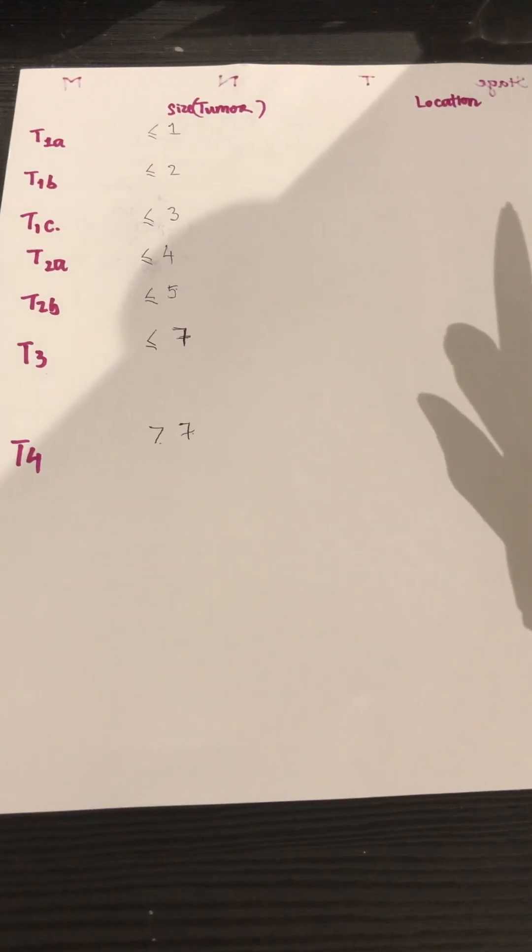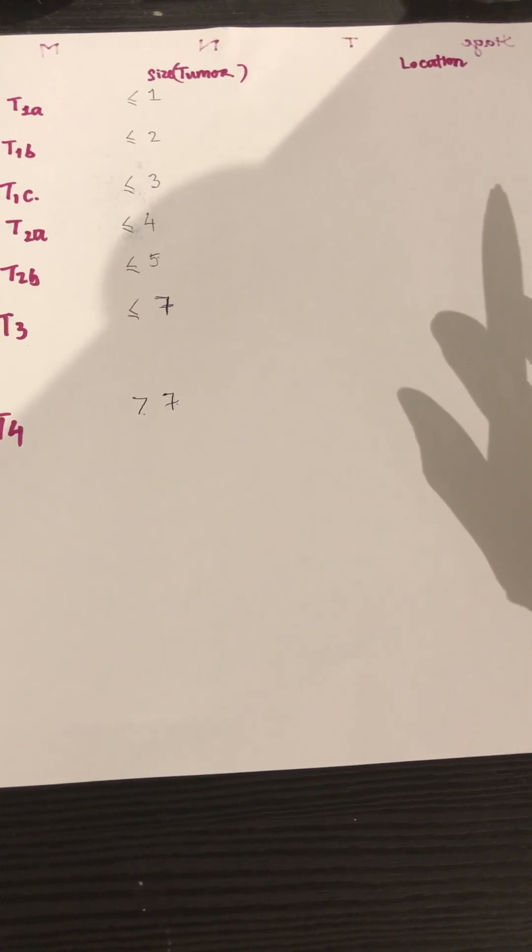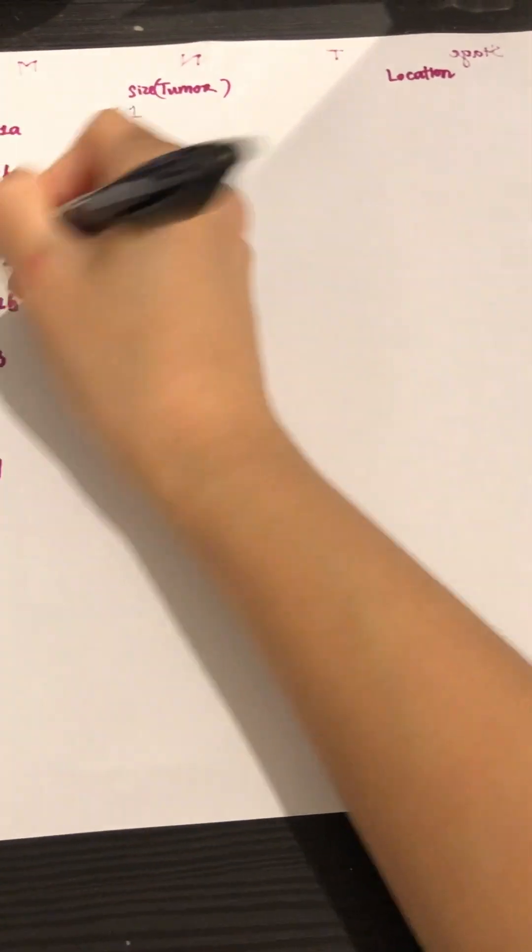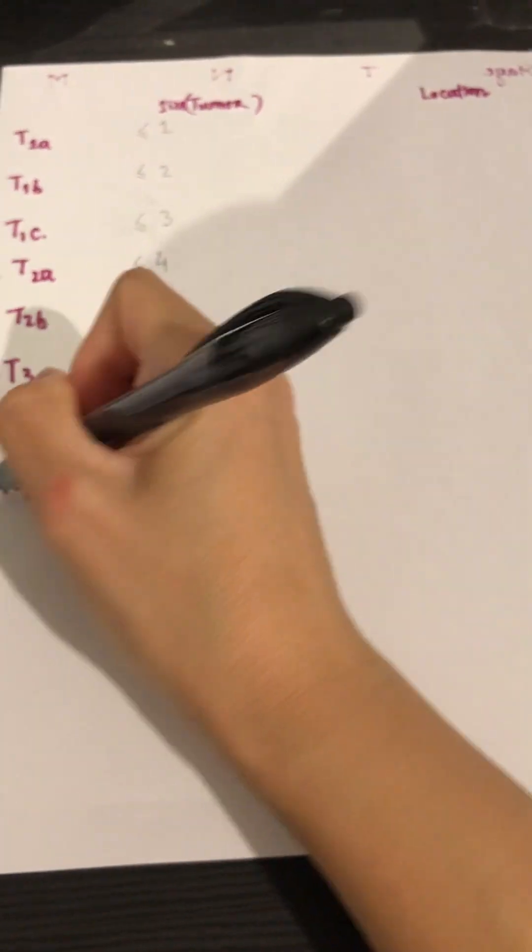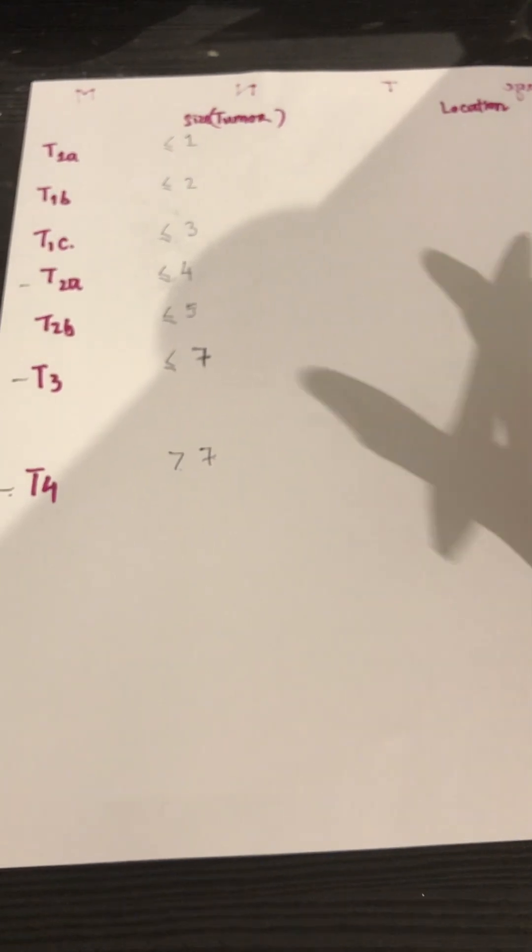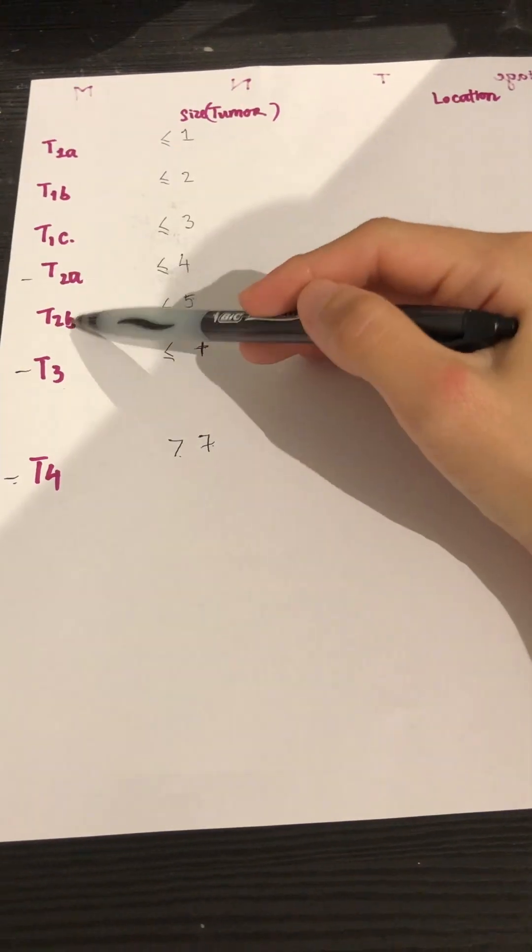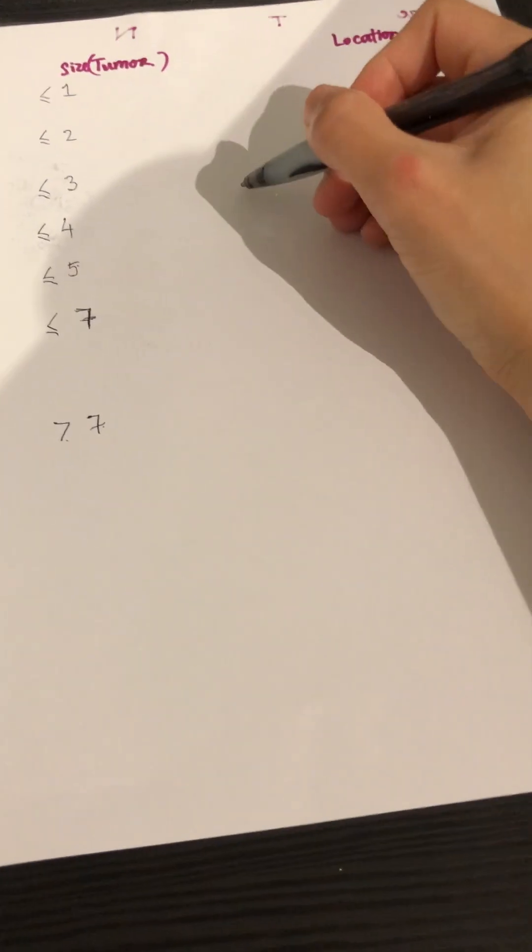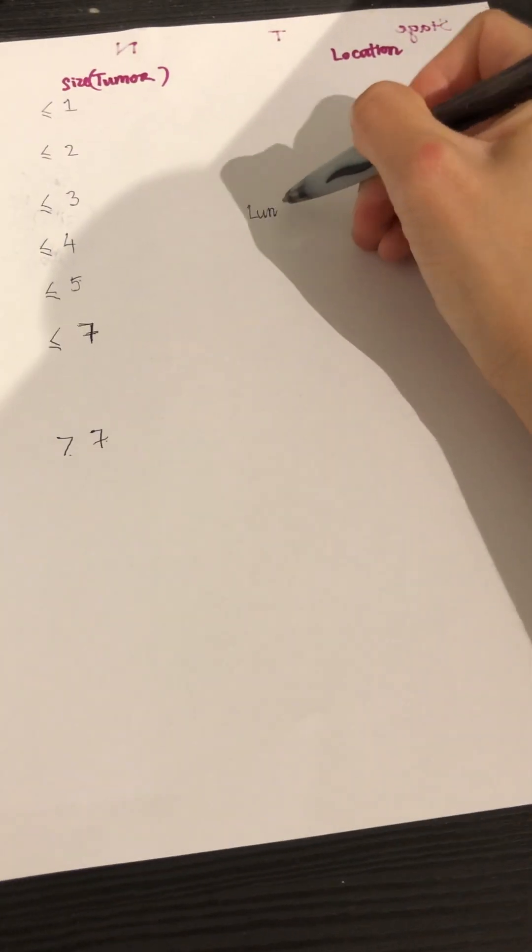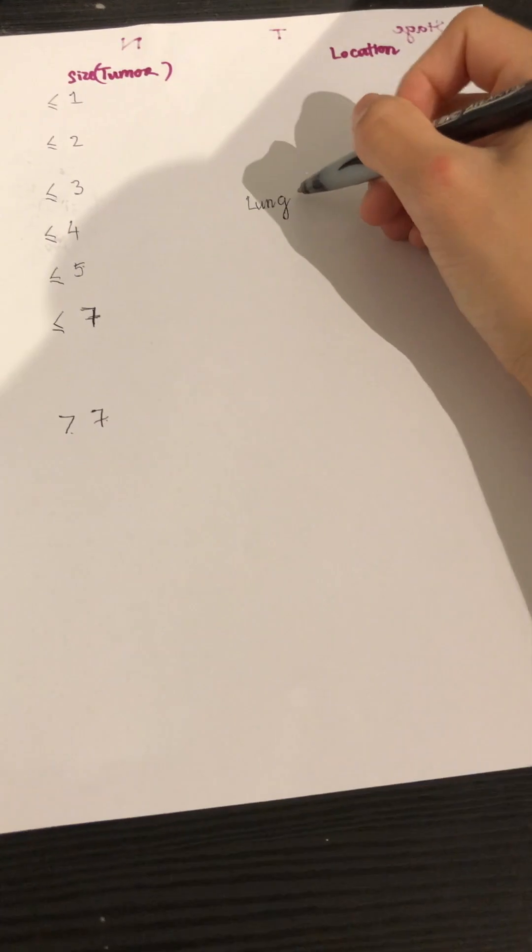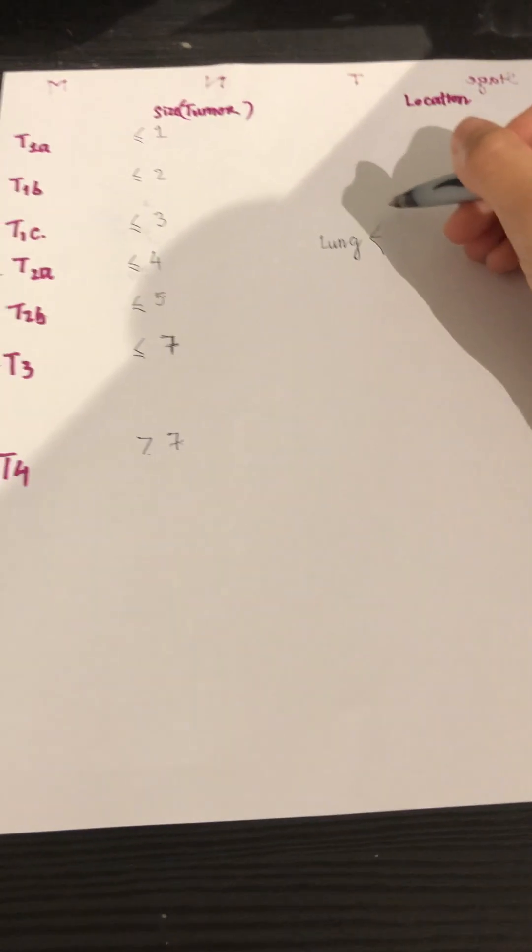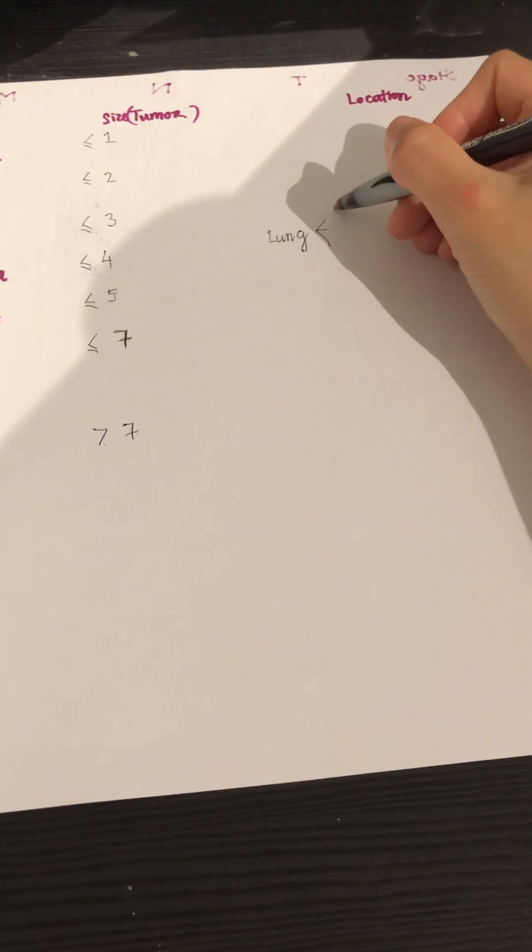And then second would be the location of the tumor. It would be a little complicated, but it's not that complicated. And so to make it easy, let's do it this way. So anything that T2 would be will involve the lung, regardless of the size. I mean, will involve this part of the lung, for example.